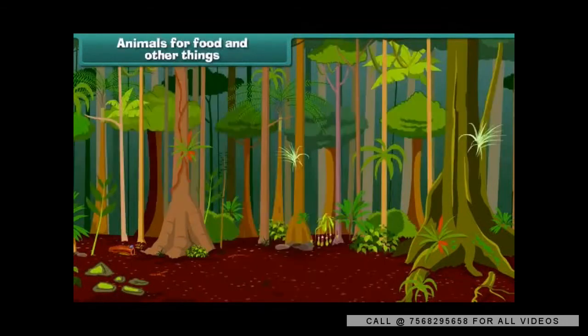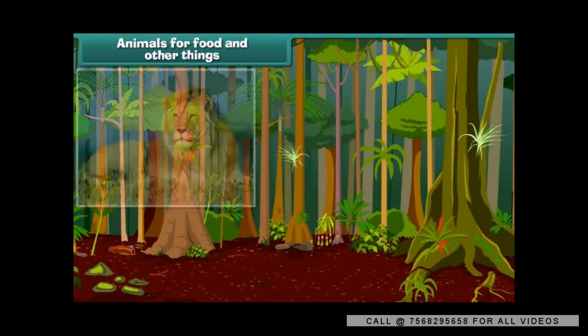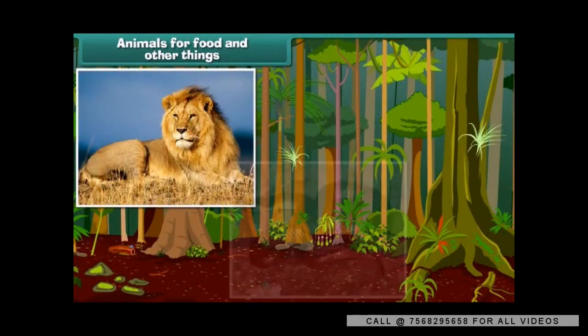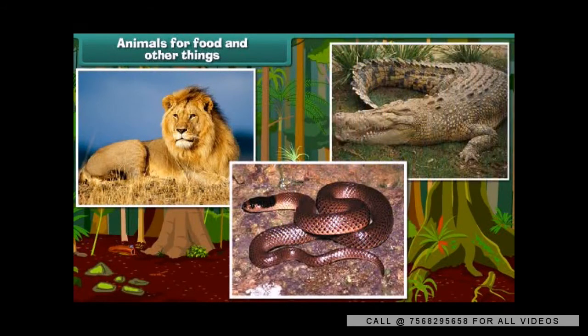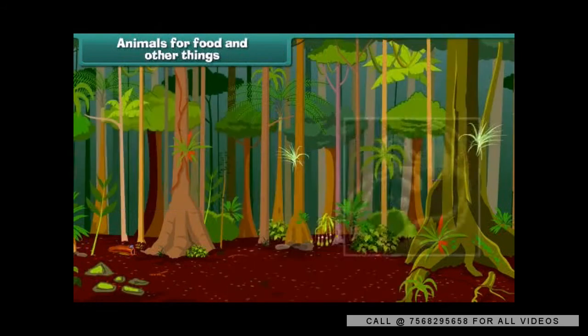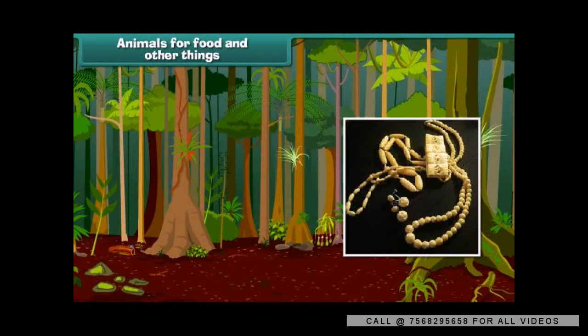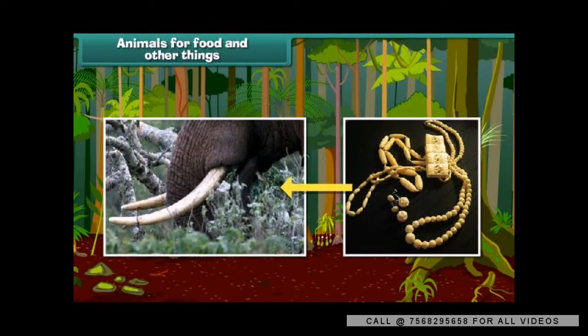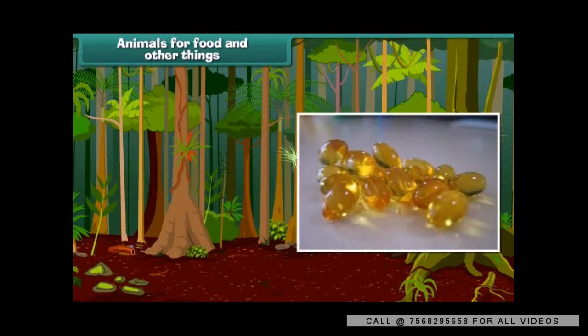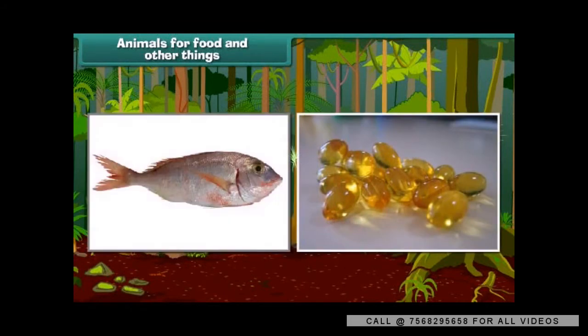Wild animals are useful to us. We get fur and leather from animals like lion, snake, and crocodile. Beautiful ornaments and showpieces are made from elephant teeth. The oil extracted from the liver of some fishes is used in medicines.